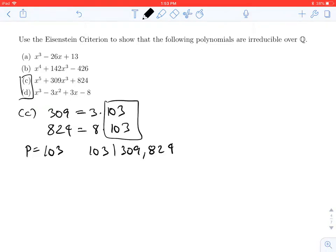There's no fourth power, square, or linear term to worry about—they all have zero coefficients. And 103 doesn't divide the leading coefficient 1, and 103 squared does not divide 824.